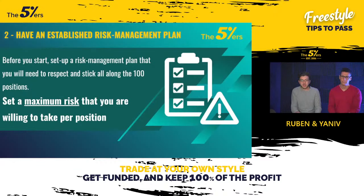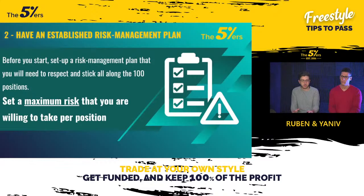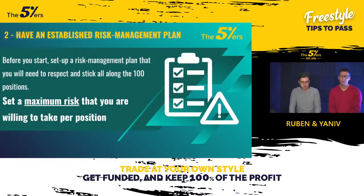The second tip is to have an established risk management plan. Before you start, you must set up a risk management plan that you will need to respect and stick to across all positions. Even though you don't have a drawdown limit in the Freestyle program, you should have a risk management plan in place because if you draft your positions without setting a risk limit, you could incur drawdown and it will be complicated to finish the challenge with a profitable balance. Try to set a maximum risk you're willing to take per position.